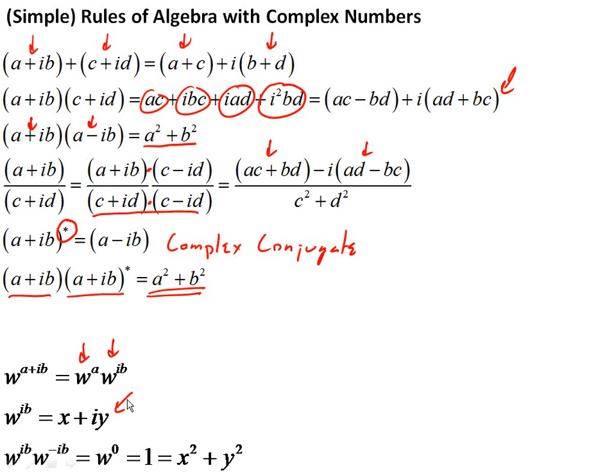It turns out that a number raised to its imaginary part can be written as a complex number. If you multiply w to the ib times its complex conjugate, you're going to end up with w to the 0, which equals 1. But if you put x plus iy into this, you get x squared plus y squared. What two things, when we take the square of one plus the square of the other, equals 1? If you remember your trigonometry, we come up with this equation.